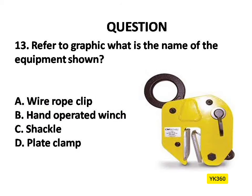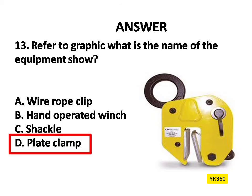Question Number 13. Refer to graphic — what is the name of the equipment shown? Options are: A. Wire rope clip, B. Hand operated winch, C. Shackle, D. Plate clamp. The answer is Option D: Plate clamp.